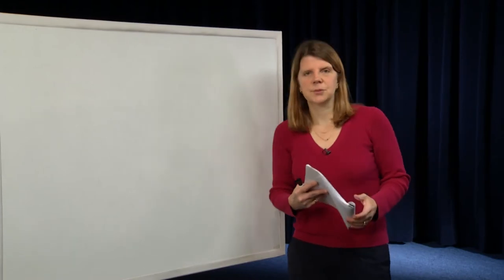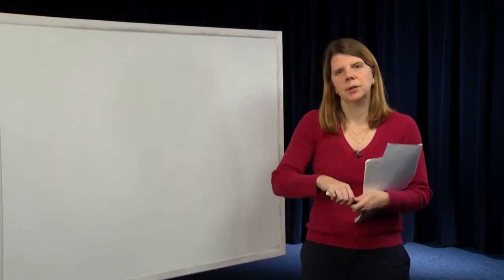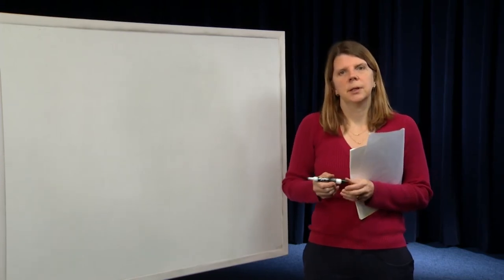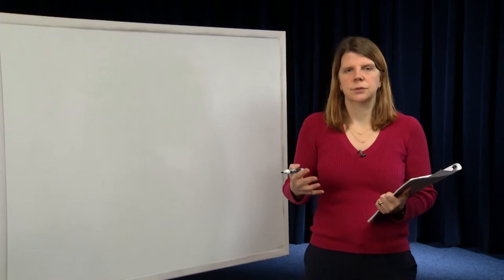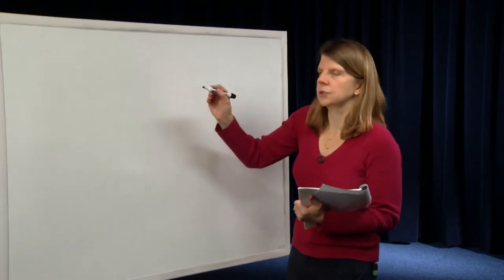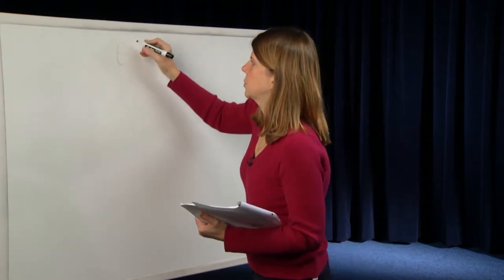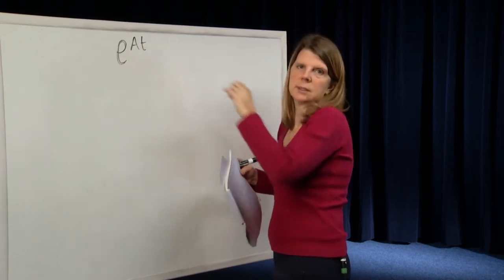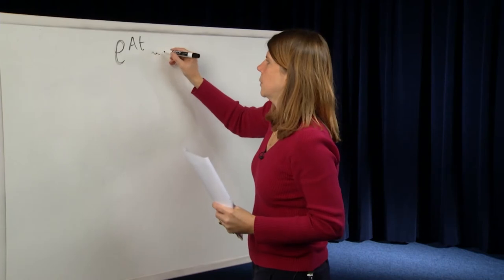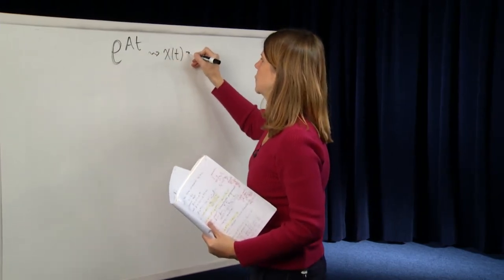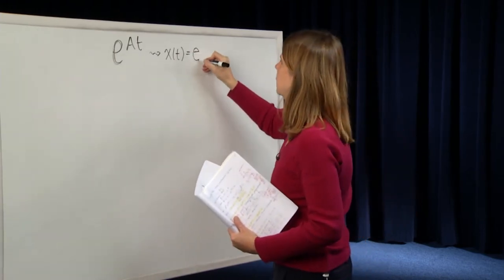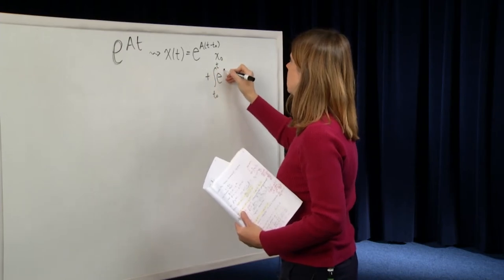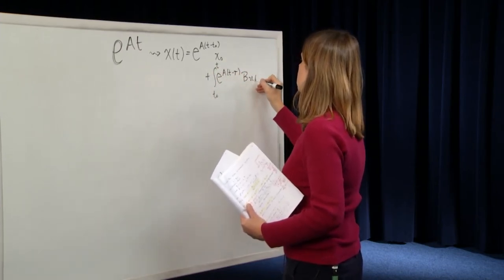The background for this really comes from our knowledge that in order to compute solutions to linear time-invariant differential equations, and to analyze the solutions and think about control, we need good ways to compute solutions to functions of a matrix. In particular, the function we've been looking at is the matrix exponential e to the At, where in the exponent is an n by n matrix A. We know this is important because our general solution to x-dot equals Ax plus Bu is given by e to the A(t minus t0) times x0, plus the integral from t0 to t of e to the A(t minus tau) times Bu at tau d-tau.